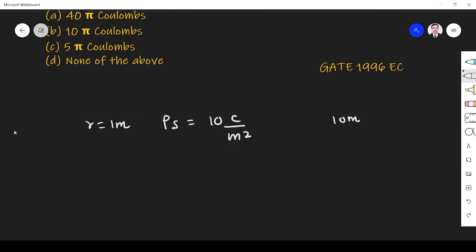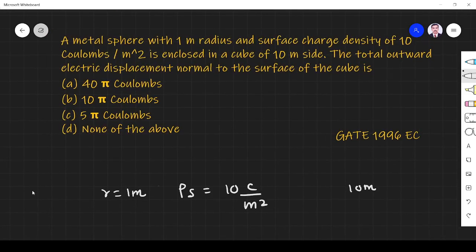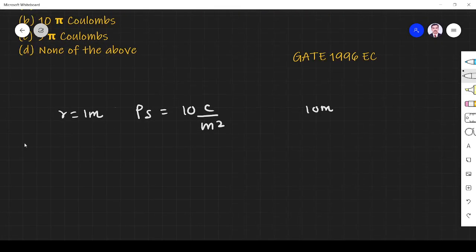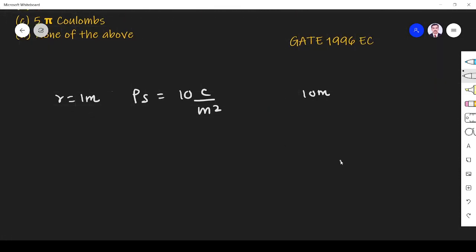We have a metal sphere of 1 meter radius with surface charge density of 10 coulombs per meter squared, enclosed by a cube.